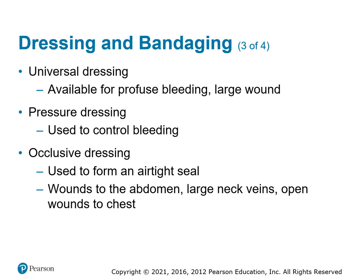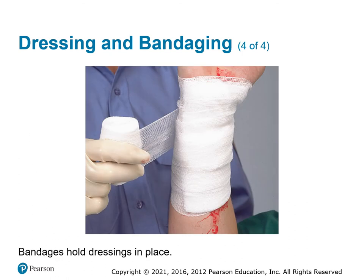Occlusive dressings are typically a piece of gauze soaked in Vaseline, sealed in a foil pouch to keep it moist. Open it up, discard the gauze, and use the foil pouch as your occlusive dressing. Place it over abdominal wounds to keep heat in, since the organs lose heat quickly through open abdominal wounds. For any large open neck vein, place the occlusive dressing over it to keep air from being sucked into the vein. For open chest wounds, it prevents air from entering the thorax through the wound instead of through the normal airway.